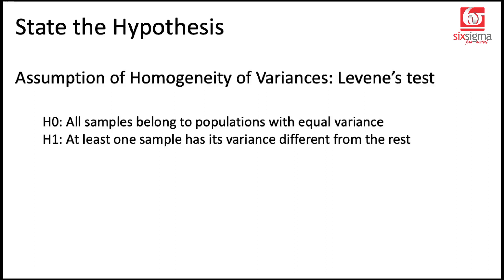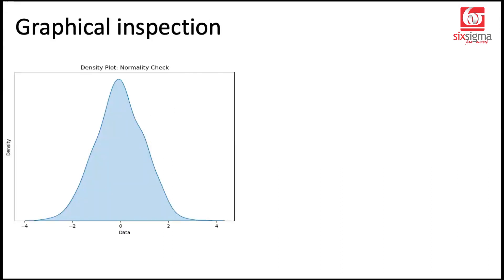Now towards the end of this video, we'll also discuss what are our options when these assumptions are not satisfied. But let's just understand this conceptually. So let's say we have a distribution. It is not a perfect bell-shaped curve as you can see, but looks more or less like a bell curve.